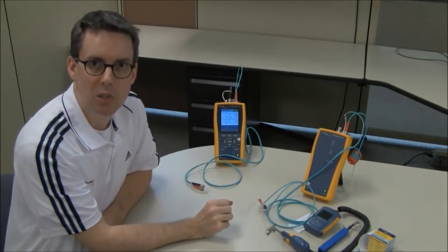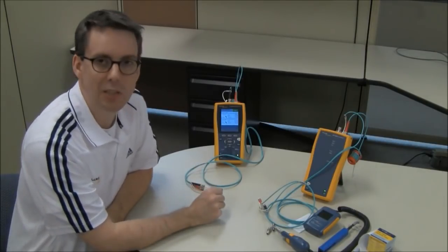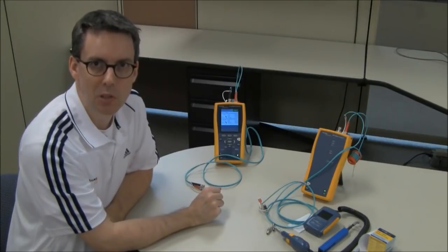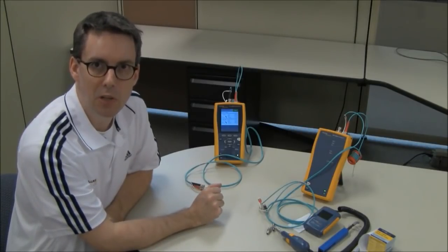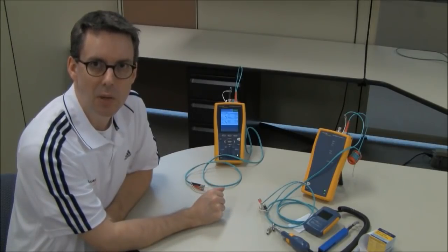And that is how you would successfully test an ST to ST duplex fiber link using the DTX cable analyzer with the Series 2 modules using the preferred one jumper reference method. That one jumper reference method will avoid you getting negative loss readings.